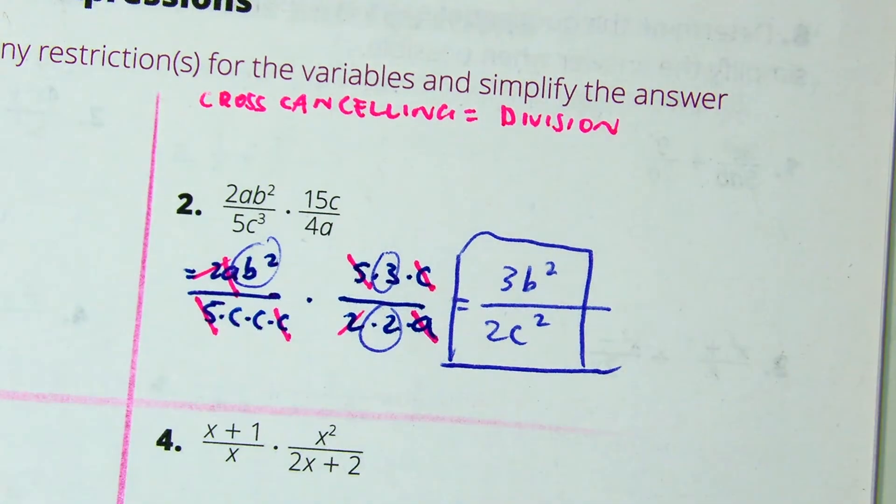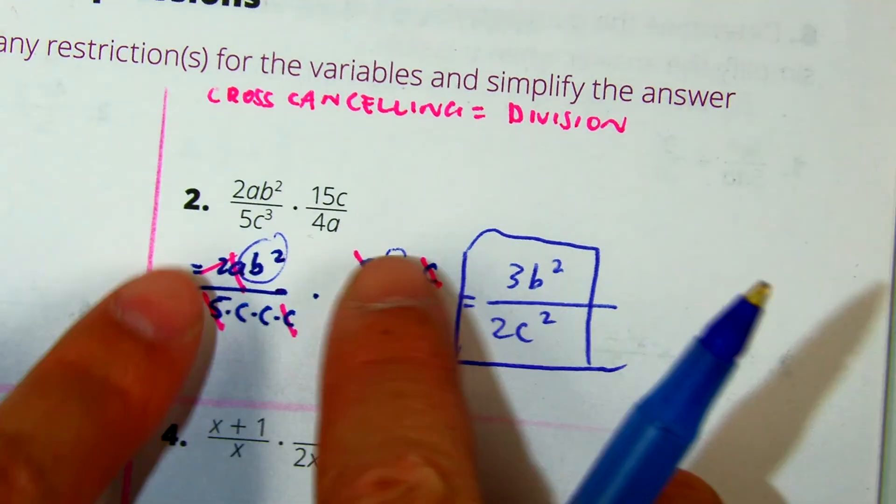Yeah, we set the denominator not equal to 0. Look at the original problem. Put your finger on the variables in the denominator. Show your partner. Give him a head nod. These are my variables.